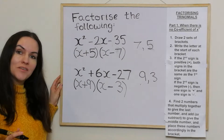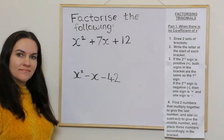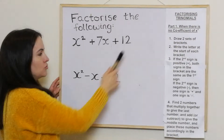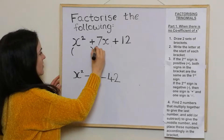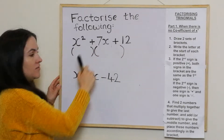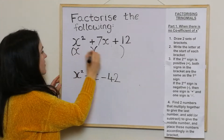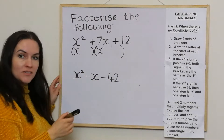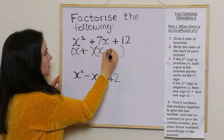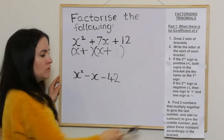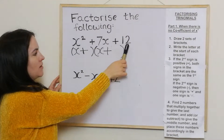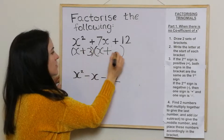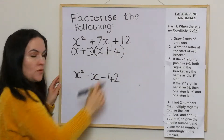For these final two examples, once again there's no coefficient of x squared, so we draw two sets of brackets and write the letter at the start of each bracket. The second sign is positive, so both signs are the same as the first one — both positive. We're looking for two numbers that multiply together to give 12 and add together to give seven. The two numbers are three and four, because three times four is twelve and three add four is seven.